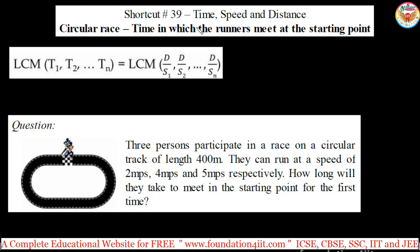Time, speed and distance in this circular race — the time in which the runners meet at the starting point. When you get these type of questions, we have to find out the LCM of times directly. Just see the question and understand how to apply this shortcut trick directly.